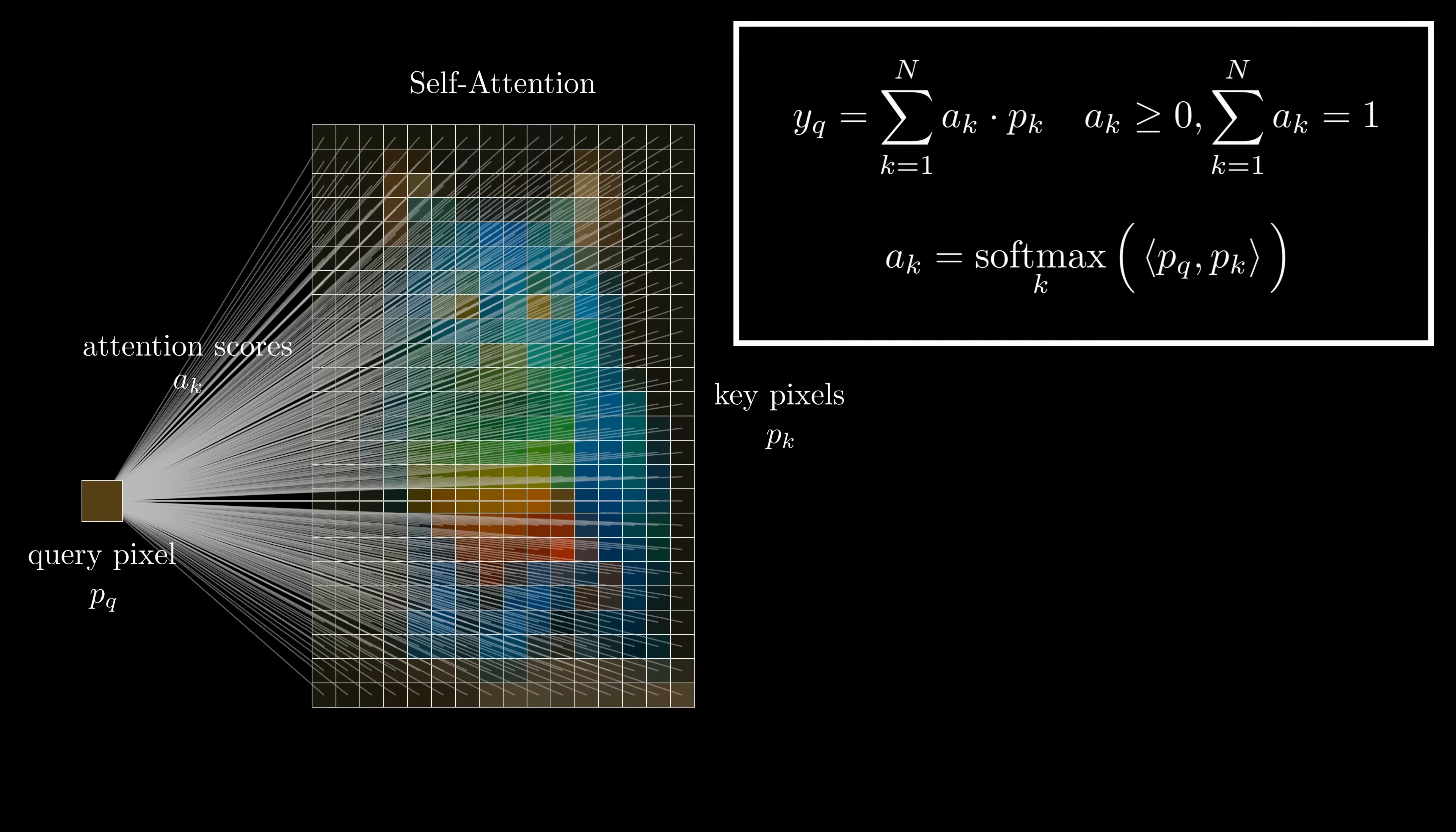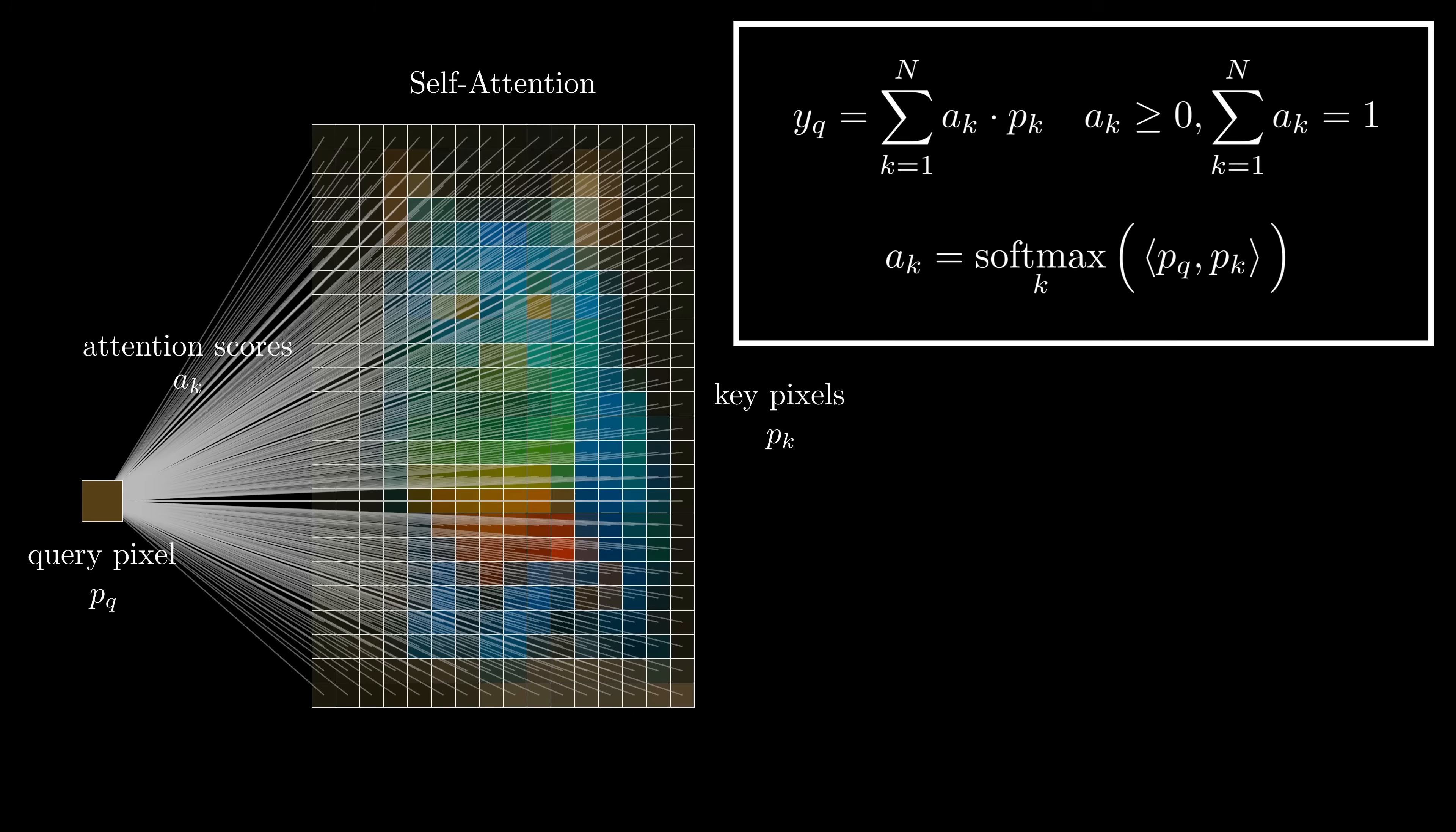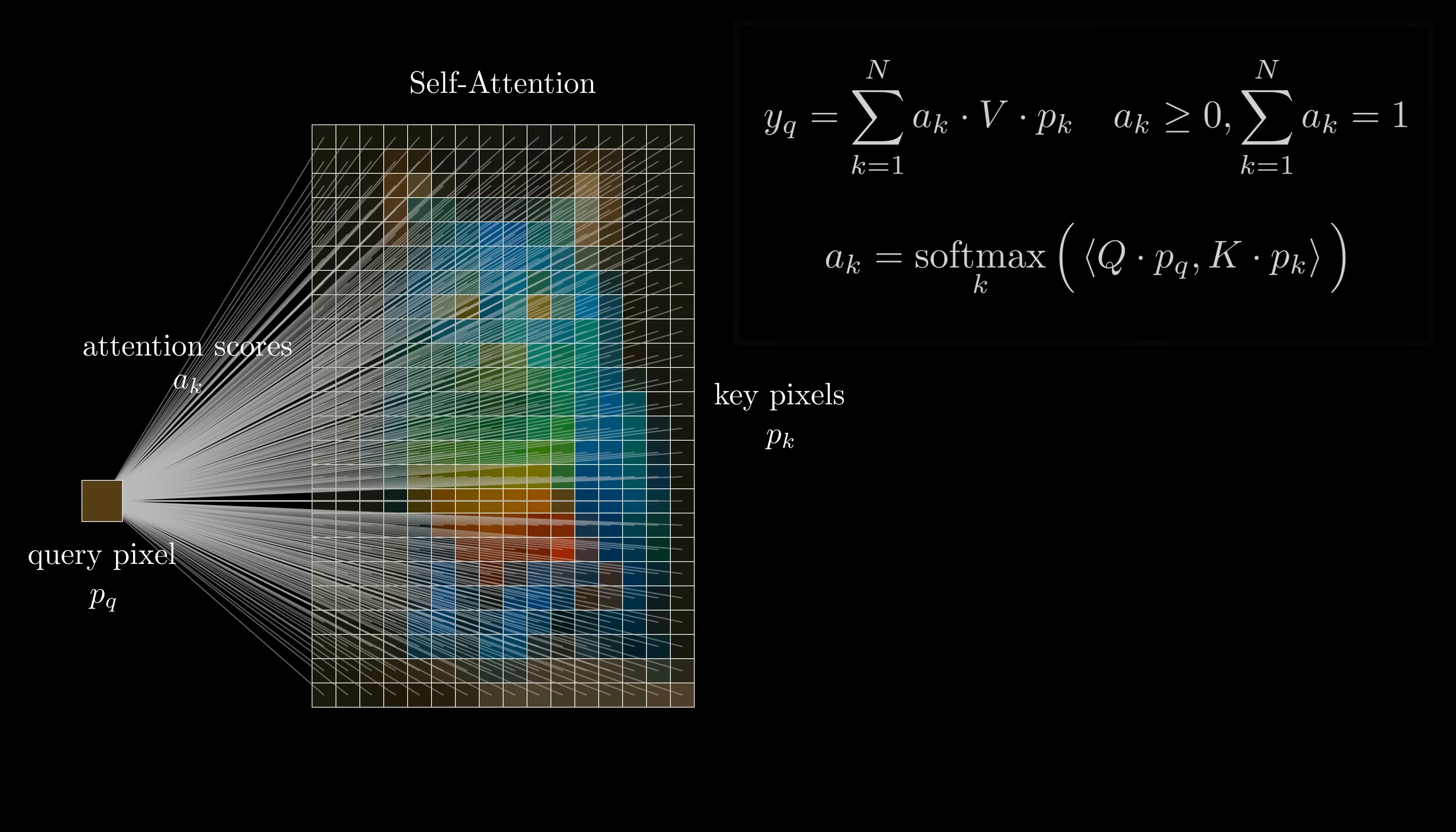What we have here is a complete definition for the output pixel. But it's fixed, it's not learned, just like the blurring kernel. In the context of a neural network, we'll generalize this operation by passing all pixel vectors through linear transformations. So we'll multiply them by learned matrices. The query pixel gets a query matrix, the key pixels share the same key matrix, and the output pixel gets a final value matrix. And that is self-attention, minus some constants that I'm omitting for brevity.